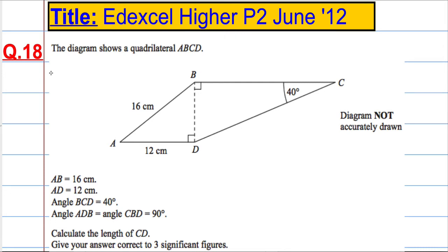Question 18. The diagram shows a quadrilateral ABCD, and AB is 16, AD is 12, BCD is 40 degrees, ABD and CBD are both 90 degrees, and we're asked to calculate the length of CD and give our answer correct to three significant figures.